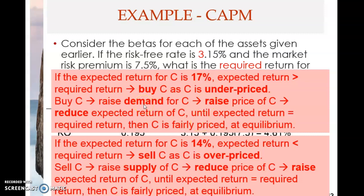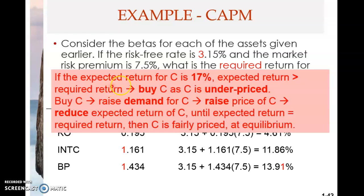Welcome back to part 4 of chapter 13. If the expected return for stock C is 17%, which is higher than the required return, then investors will buy stock C because C is underpriced. Buying stock C will raise the demand for C, which will raise the price of C. When the price goes up, the increased demand for C will raise the price.